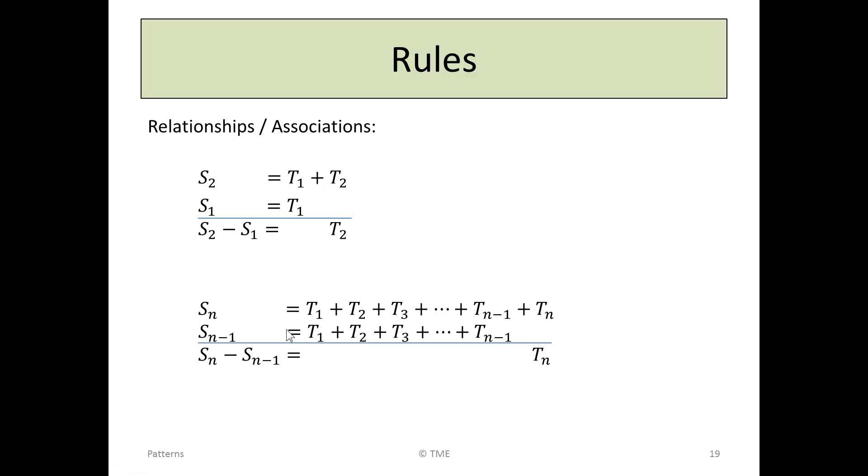If we do this more generally, Sn, the sum of N terms, is T1 plus T2 plus T3, on and on and on, plus Tn minus 1, all the way to Tn, the sum of the first N terms. Whereas Sn minus 1 is the sum of everything up to the N minus first term, everything but Tn. If we see it written out like this, we can see that Sn minus Sn minus 1 is everything the first one had up to Tn minus everything the first one had up to the one before it, leaving it with just Tn. Sn minus Sn minus 1 is Tn.